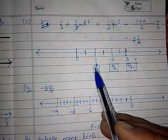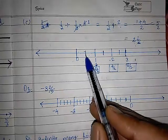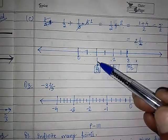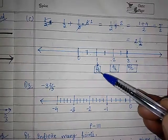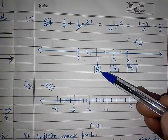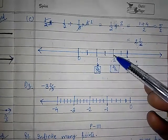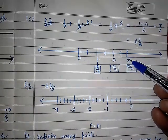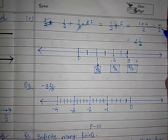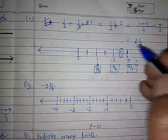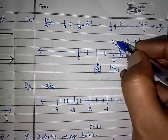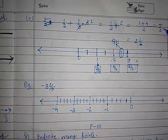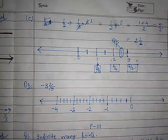Now see how to mark this. This will be your 1 by 2, this will be 2 by 2 — and you know 2 by 2 gives you 1. Then 3 upon 2, 4 upon 2 which gives you 2, 5 upon 2, and 6 upon 2 that is 3. How much do you have to mark? 5 upon 2. So this is your 5 upon 2. You can do it this way. Both methods — the fraction method or the mixed fraction method — are correct; your answer should be correct whatever method you are using.